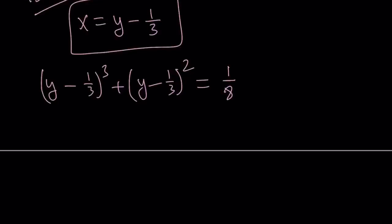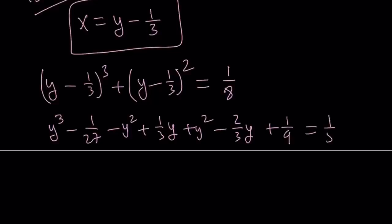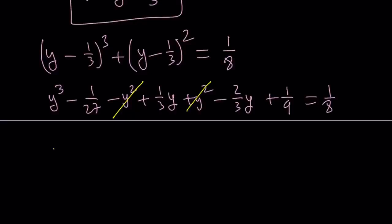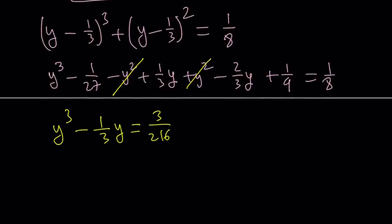If you go ahead and expand this, you're going to get y cubed minus 1 over 27 minus y squared plus 1 over 3y plus y squared minus 2 over 3y plus 1 ninth equals 1 over 8. And then notice that we can cancel out y squared. That's actually the goal. And then let's combine like terms and turn this into a reduced cubic: y cubed minus 1 over 3y equals 3 over 216. Obviously, not just 1 over 8 minus 1 over 9, we also have to add the 1 over 27.